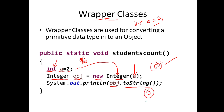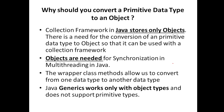A wrapper class is a class that takes a primitive data type and lets you perform certain operations using it. It wraps around the primitive data type. Before creating a wrapper object, I was not able to do 'a.something()', but after making it an object, I can call all the wrapper class methods — for example, converting the integer value to a string.